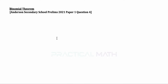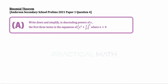The question in this video is about binomial theorem. In part A, write down and simplify in descending powers of x the first three terms in an expansion of (x to the power of 5 plus 2 divided by x to the power of 6) to the power of n, where n is greater than 0.